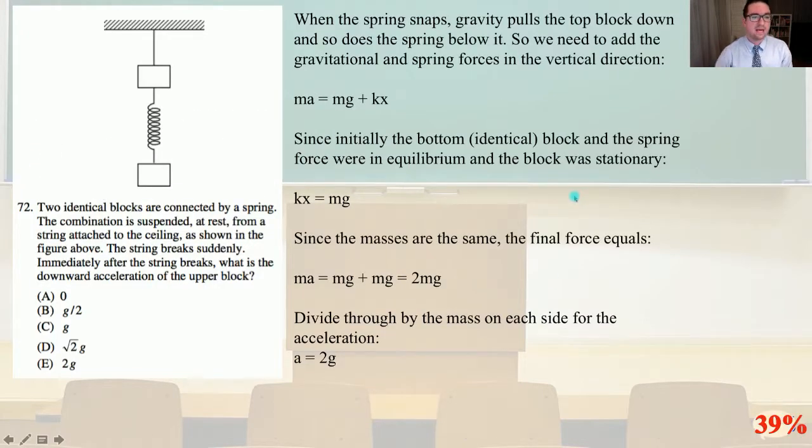Number 72. Two identical blocks are connected by a spring. The combination is suspended at rest from a string attached to the ceiling as shown in the figure above. The string breaks suddenly. Immediately after the string breaks, what is the downward acceleration of the upper block? When the spring snaps, gravity pulls the top block down and so does the spring below it. So we need to add the gravitational and spring forces in the vertical direction.